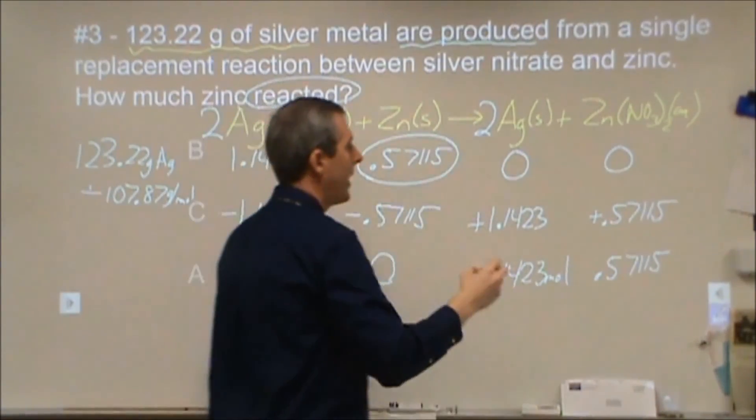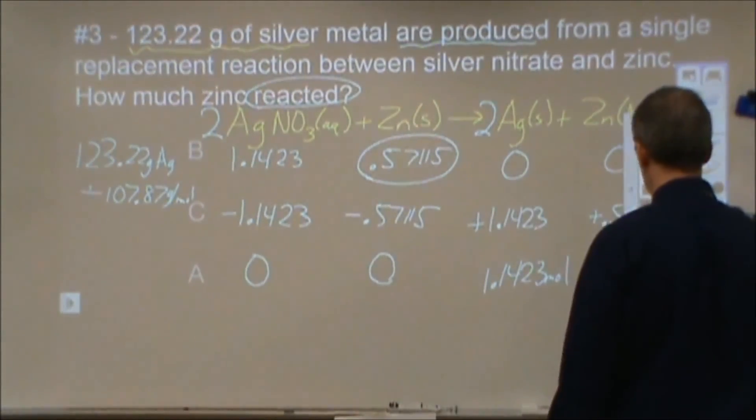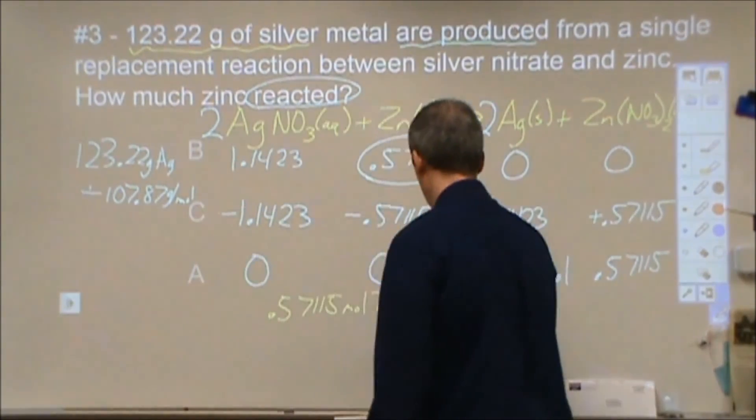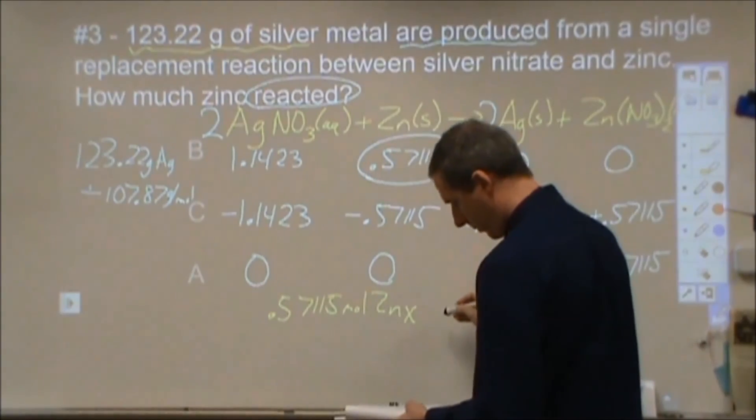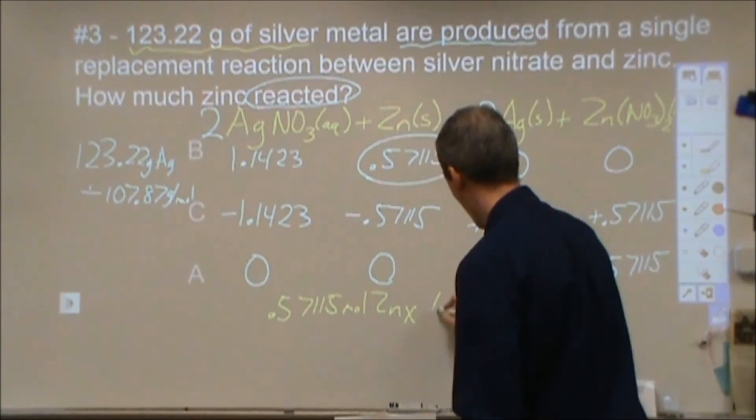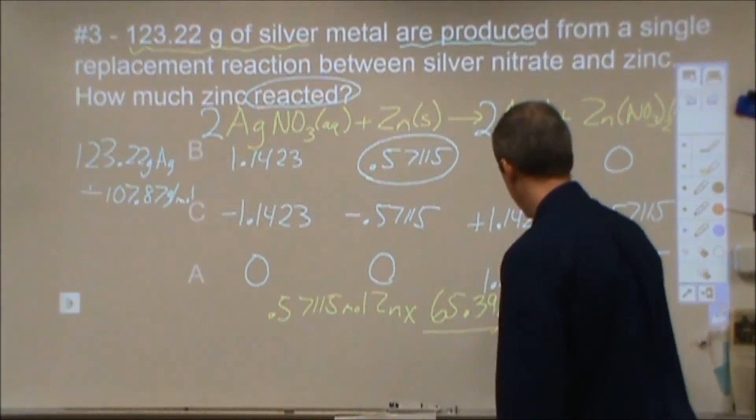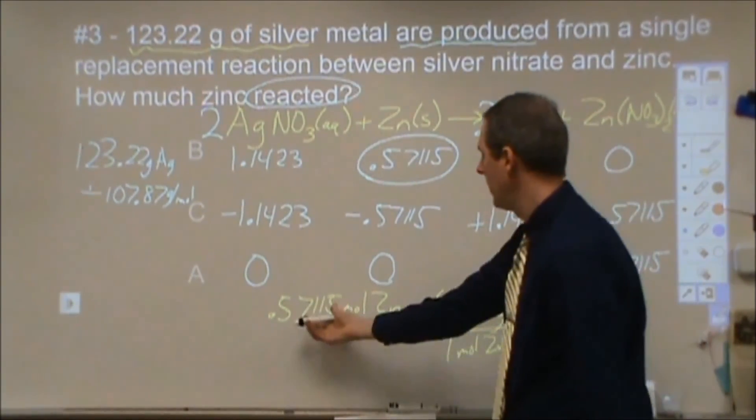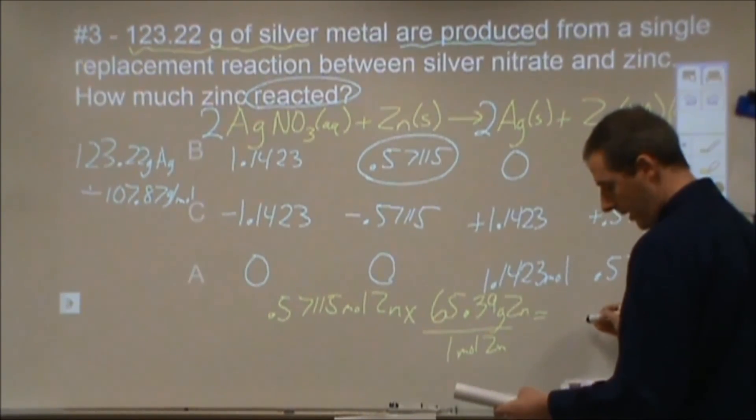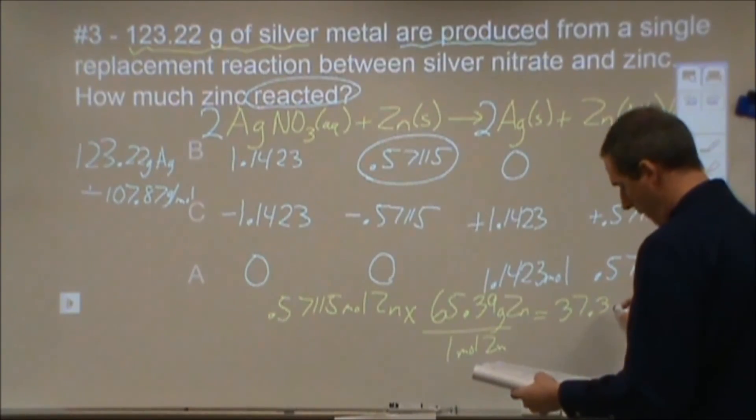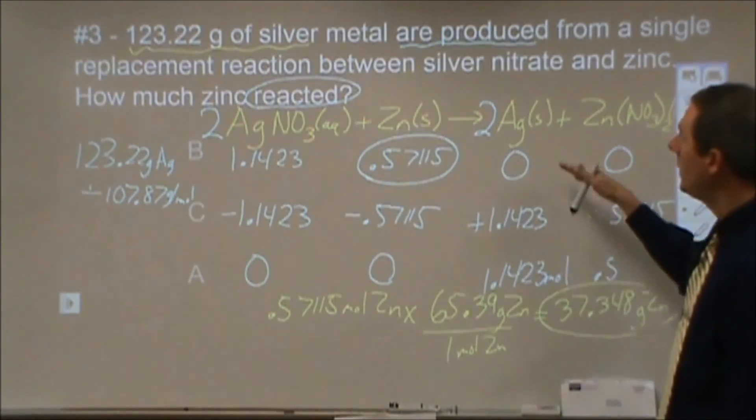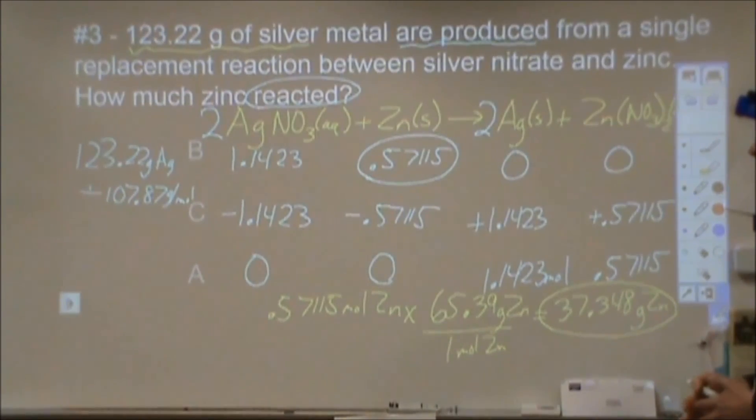Let's go ahead, like usual, and change that into grams. So we started with 0.57115 moles of zinc. To change that into grams, we multiply by the molar mass, which is 65.39. That's how many grams of zinc we had per each mole. We're looking at a little over half of a mole, so we'd expect this to be somewhere in the 30s. I calculated about 37.348 grams of zinc. So this many grams of zinc will yield 123.22 grams of silver, as long as there's enough silver nitrate.